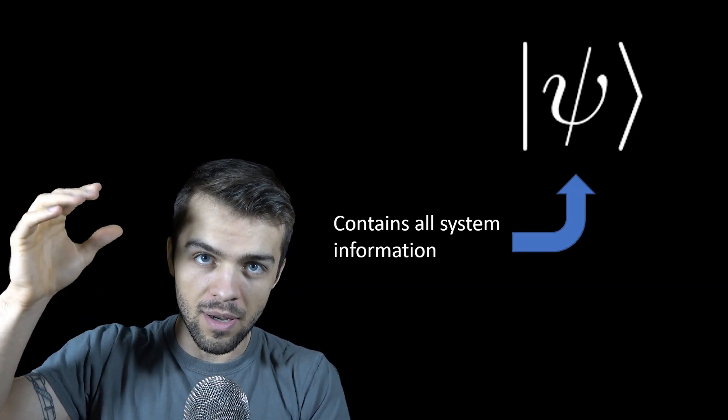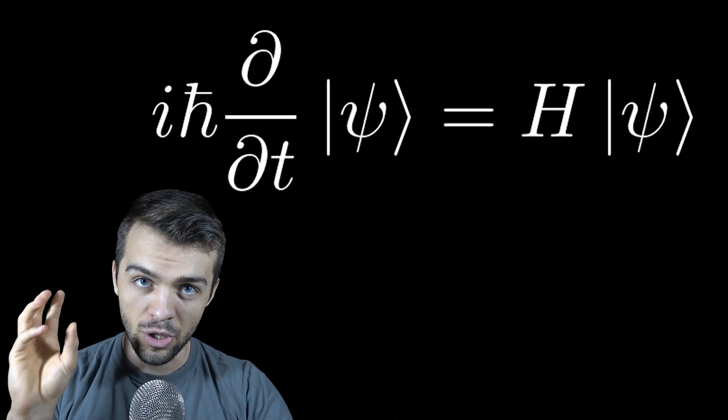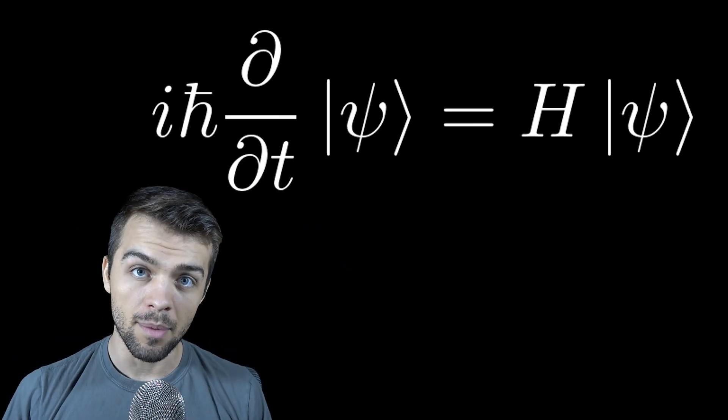Quantum mechanics is set up a little bit differently. You have a vector psi which tells you all the information about your system, and you have a Hamiltonian which tells you all the information about the surroundings and the fields that that particle or system is subject to. The Schrödinger equation tells you that the time evolution of that system is dependent on both the current state of the system and everything that the system is subject to.